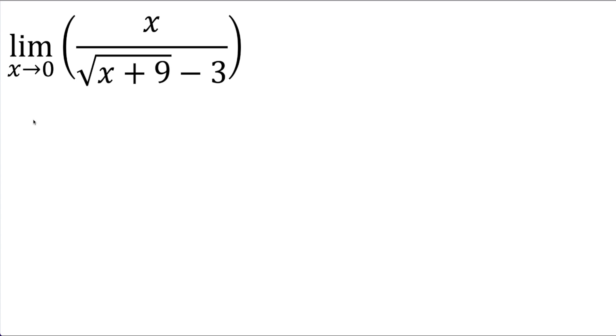So we're going to plug in a 0 and we're going to see what do we get. We get in the numerator 0 divided by the square root of 0 plus 9 minus 3 and let's see what we get.